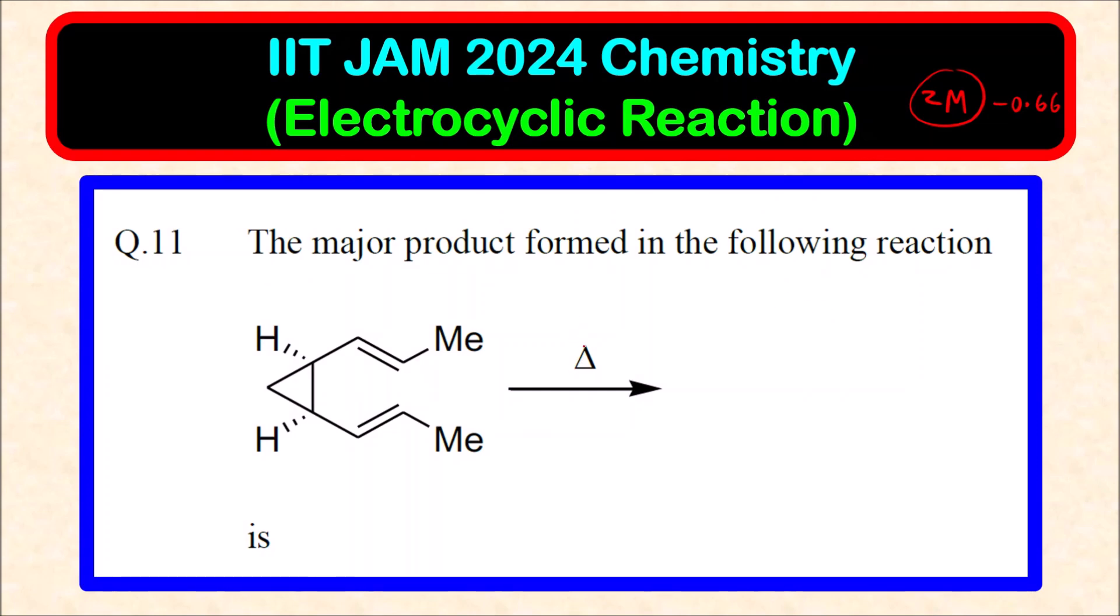How do you identify whether it is a pericyclic reaction, that is electrocyclic reaction? It is a type of pericyclic reaction from this heat. Whenever heat or light is given, the first thing that you have to check is whether it is a pericyclic reaction or not.